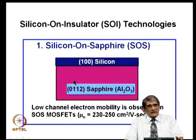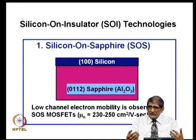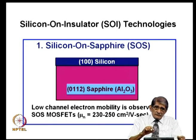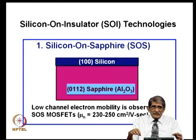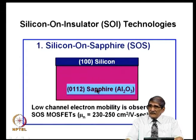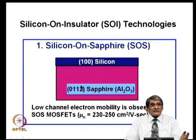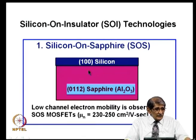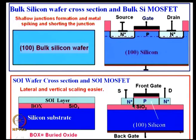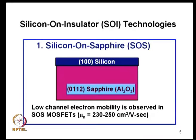Despite lower mobility, SOS offers other benefits: excellent radiation hardening and very small routing capacitance, because the thick insulating sapphire substrate keeps parasitic capacitance to the substrate very small. Junction capacitance is also small due to small junction area. In integrated circuits, the key performance limiter is stray parasitic capacitance, and SOI reduces this significantly. The 0112 orientation of sapphire gives the best lattice match to silicon, though it is still not perfect.